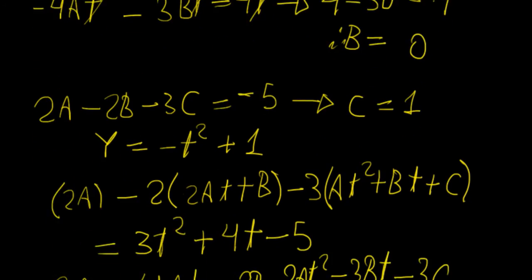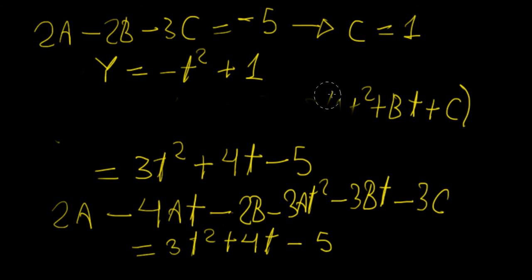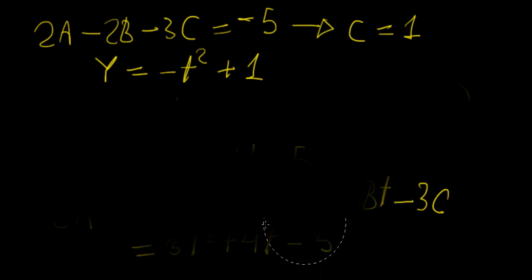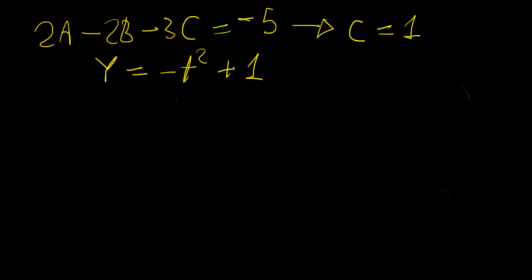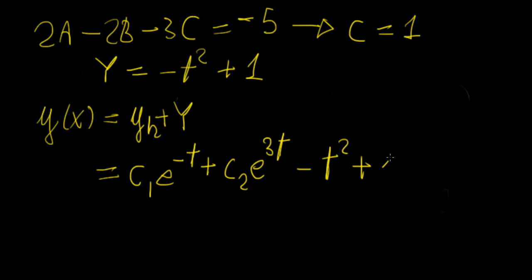Now what we can do is combine both solutions together — our homogeneous solution plus capital Y — and that gives us the general solution to the whole equation. So the general solution is yh plus capital Y, which is c1e to the minus t plus c2e to the 3t, minus t squared plus 1.